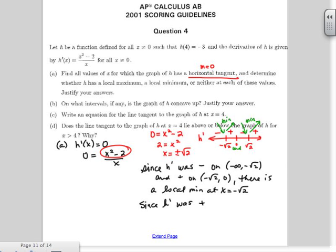And then you say since h prime was negative on 0 to square root of 2 and positive on square root of 2 to infinity, there is a local min at x equals the square root of 2. And that's the justification from the table. So you can draw the table but make sure you describe the table.